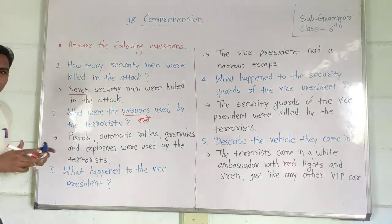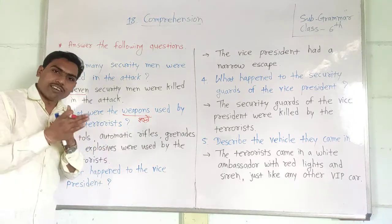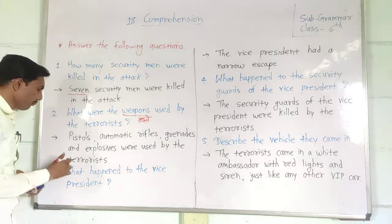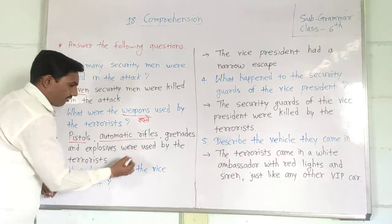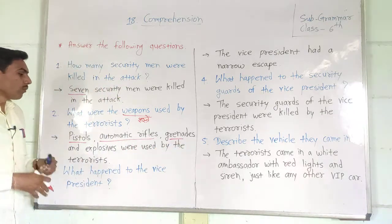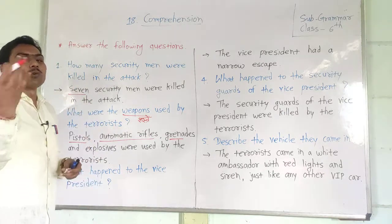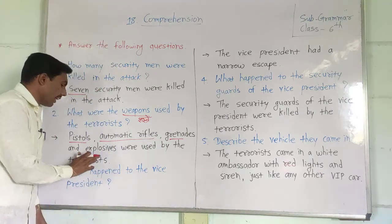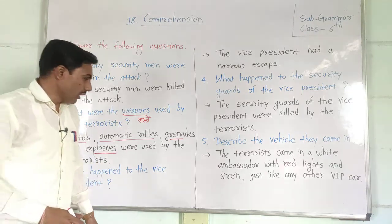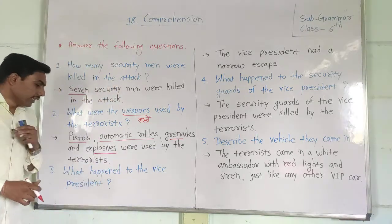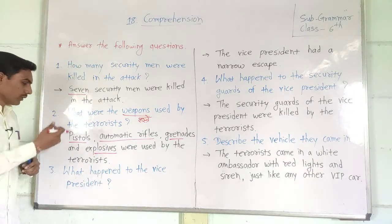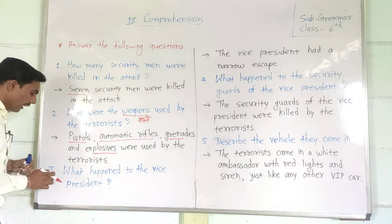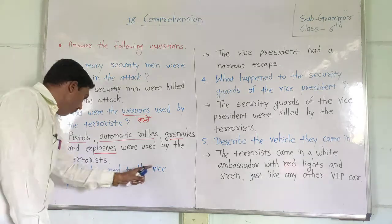The answer is: Pistol, Automatic Rifles, Grenades — grenades means half bombs — and Explosives. So the weapons used by the terrorists were Pistol, Automatic Rifles, Grenades, and Explosives.